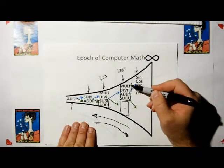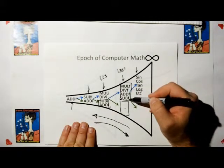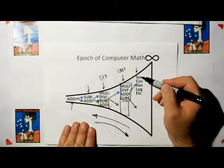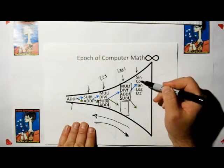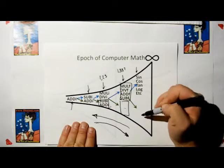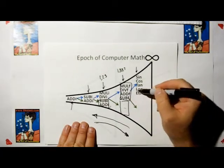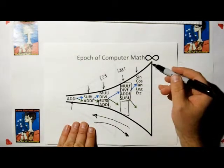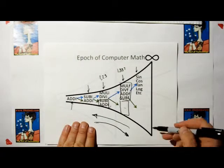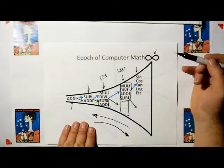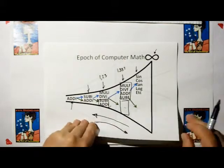Once you have floating point multiply, divide, addition, and subtraction, now you can do all your transcendental functions, which is sine, cosine, tangent, logarithm, etc. As you keep going up the epoch, the complexity of what you can do becomes virtually infinite. That's the purpose for the infinity sign.